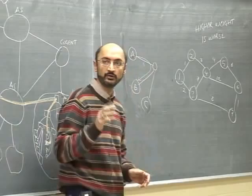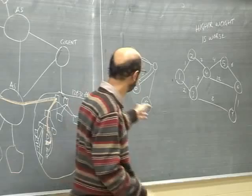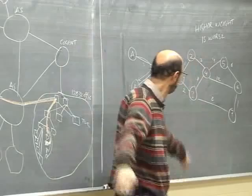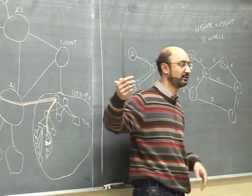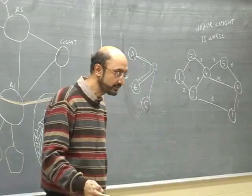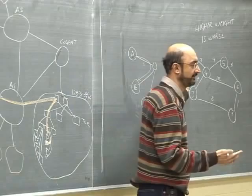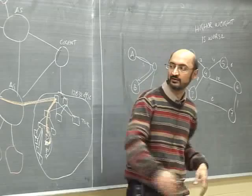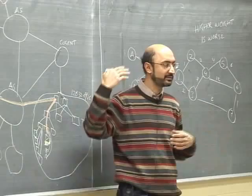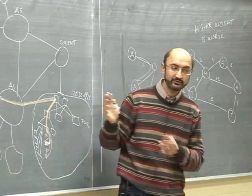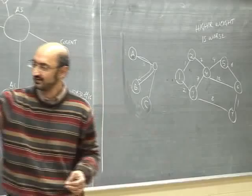One of the biggest mistakes people make studying routing is they see the abstract graph picture and think they understand it, but when confronted with the real network diagram they have no idea what's going on. You have to make the connection that the graph is an abstraction of reality. This graph and the detailed network picture are the same thing — one is the abstraction, one is the physical layout.